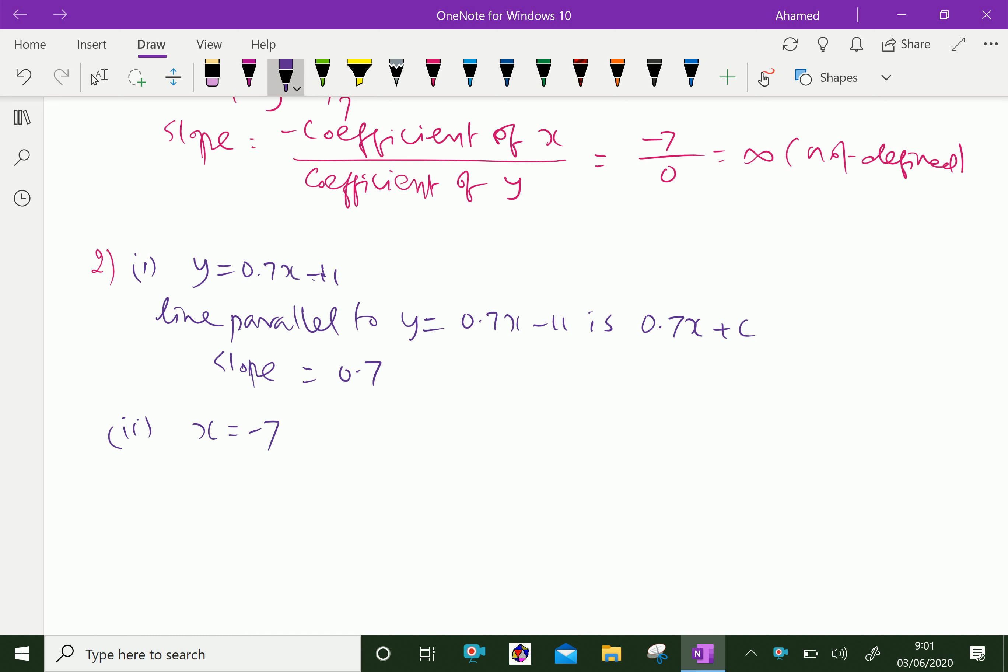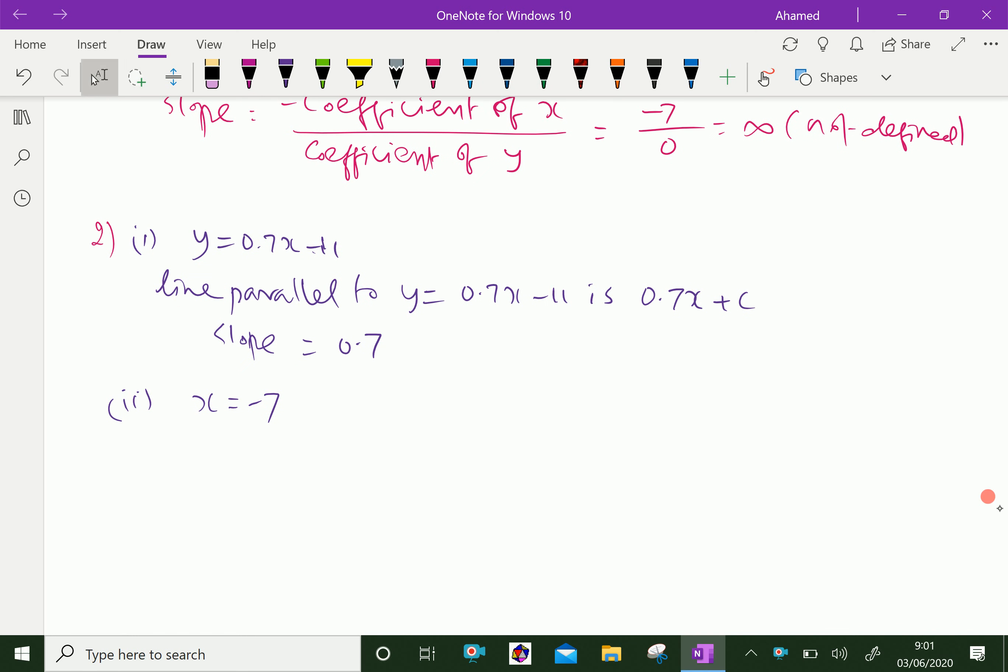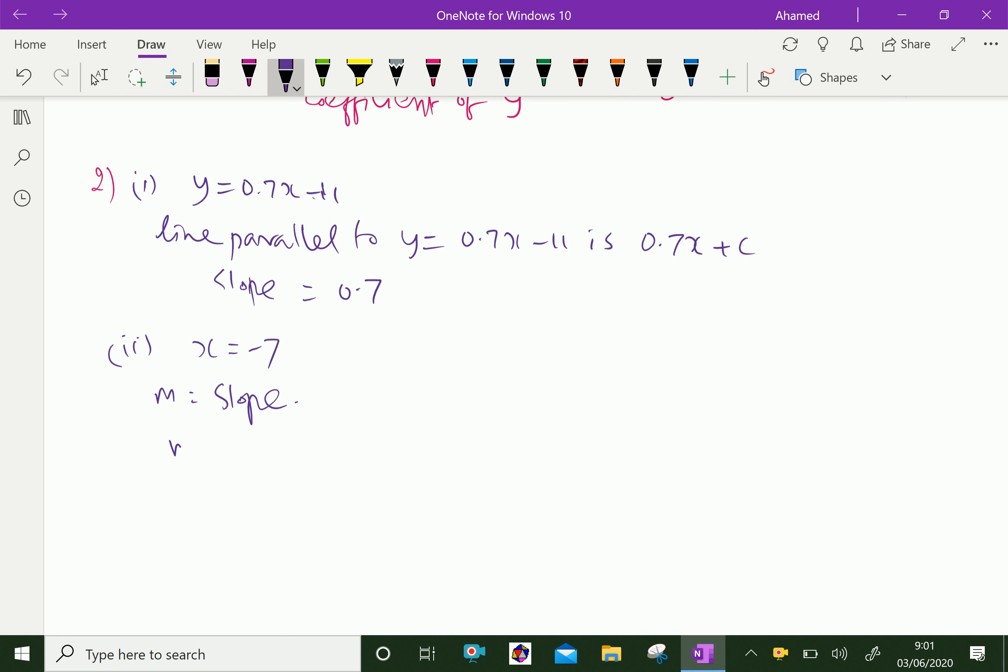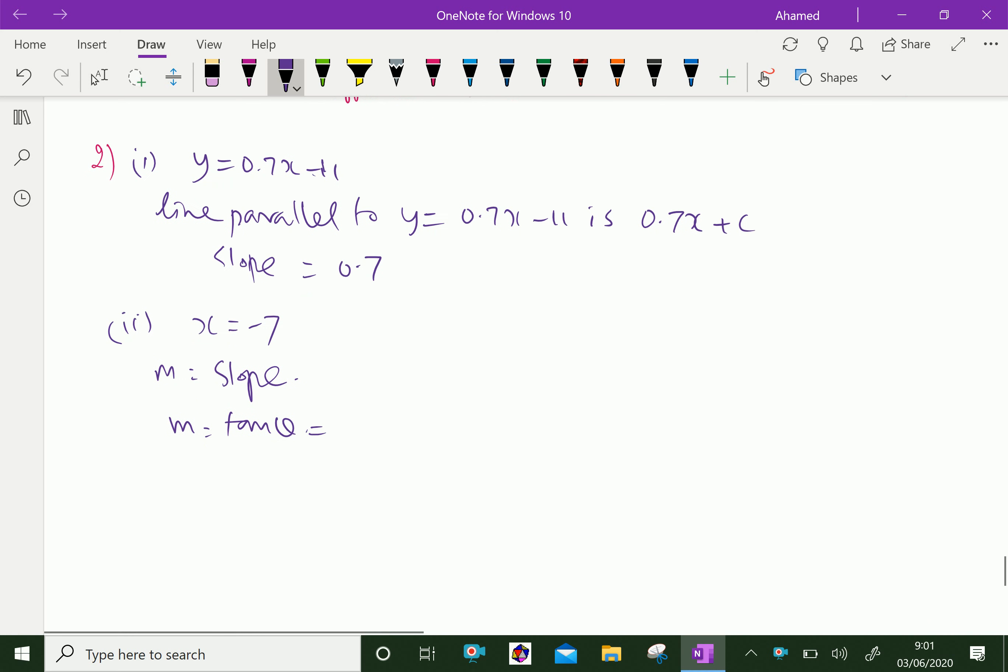Let m equal the slope. Therefore, m = tan θ. Here, because x = -7 means it is parallel to the y-axis, therefore tan θ...